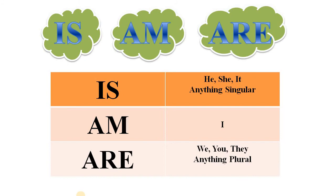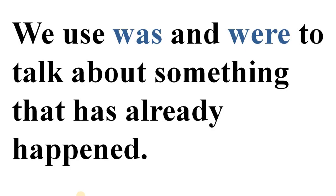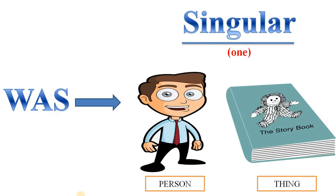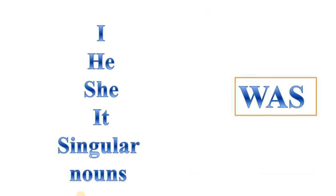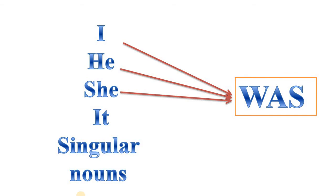Now let's learn the use of was and were. 'Was' is used when we talk about one person or thing — that means with singular subjects. Look here: I was, he was, she was, it was, and all singular nouns. Singular nouns means one person, one animal, one place, or one thing. So with a singular noun, we use 'was'.